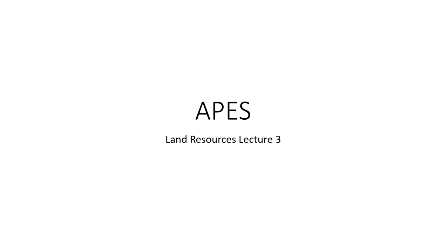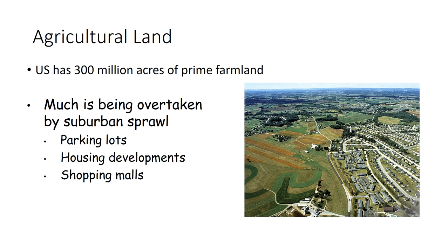We're going to wrap up the rest of Chapter 18, which will conclude our reading. So the last couple pieces of land resources we need to cover are agricultural land and then wetlands, coastal wetlands, and estuaries.